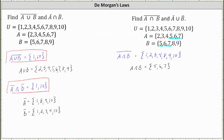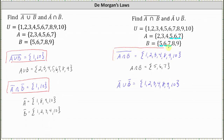Now let's find A complement union B complement. This is the set containing the elements that are not in A or not in B. Since we have A complement and B complement, we can see the elements that are in A complement or B complement are {1, 2, 3, 4, 8, 9, 10}. Notice we get the same result for the complement of the intersection of A and B as well as A complement union B complement.